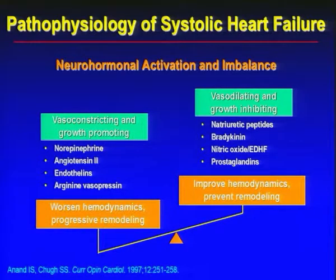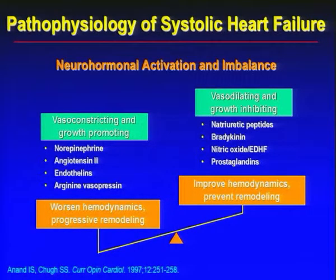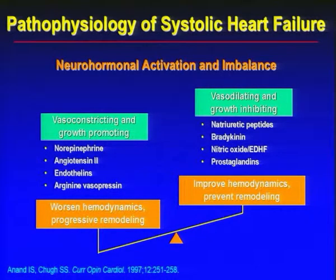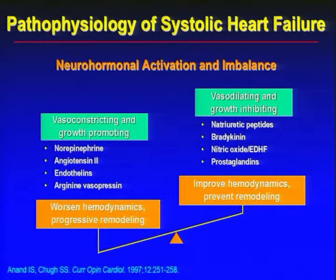Neurohormonal activation consists of neurohormones which are good and which are bad. On the left side you will find vasoconstricting and growth promoting hormones which are norepinephrine, angiotensin, endothelins and arginine vasopressin. They all promote growth and worsen hemodynamics and lead on to progressive remodeling. At the same time there is activation of vasodilating and growth inhibiting hormones which are natriuretic peptides, bradykinin, nitric oxide and certain prostaglandins, and acting together they improve hemodynamics and prevent remodeling. Once there is decompensated heart failure, it is the neurohormones with adverse effect which have a dominant action and that is how remodeling occurs.